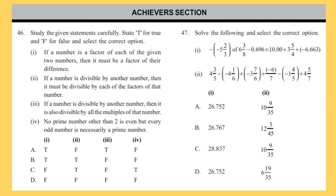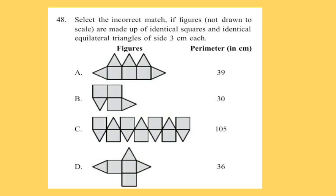Question 47: Solve the following and select the correct option. Question 48: Select the incorrect match if figures — not drawn to scale — are made up of identical squares and identical equilateral triangles of side 3 cm each.